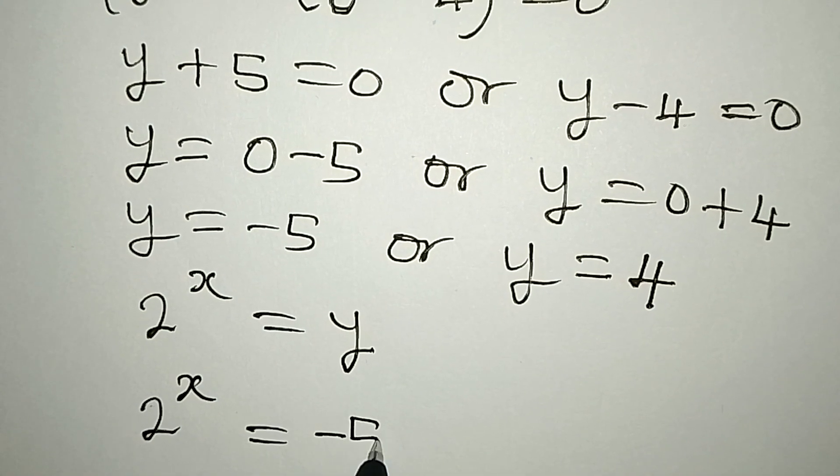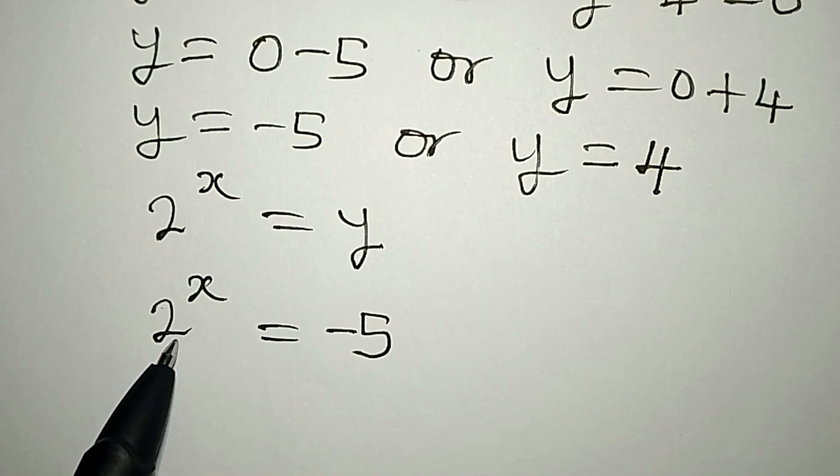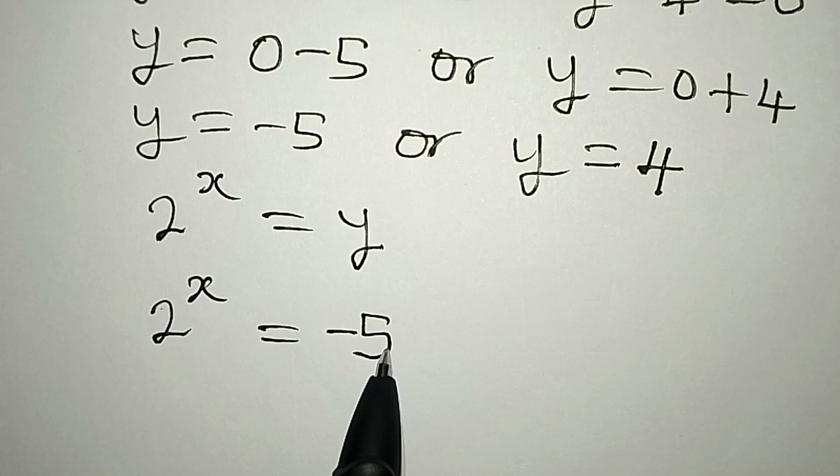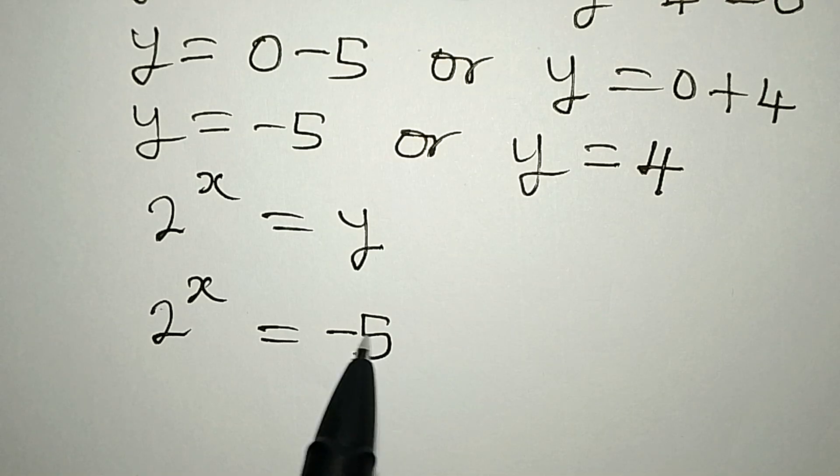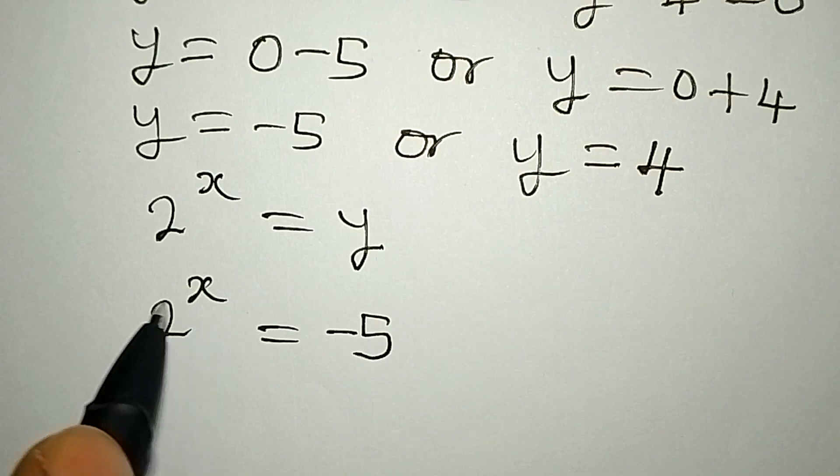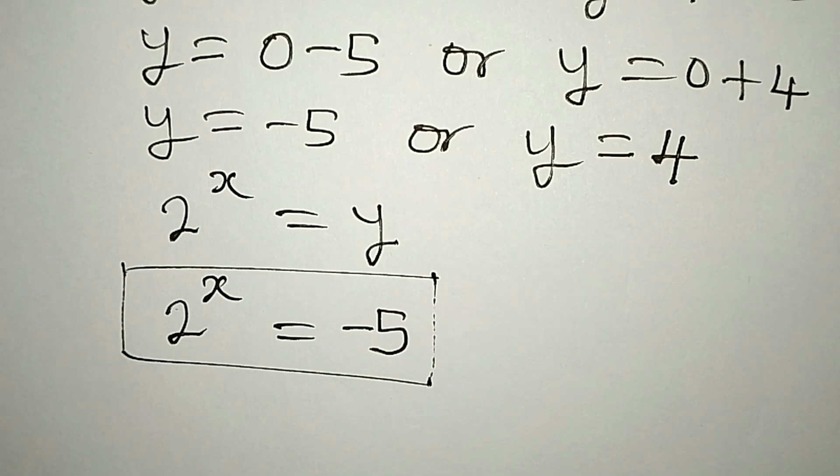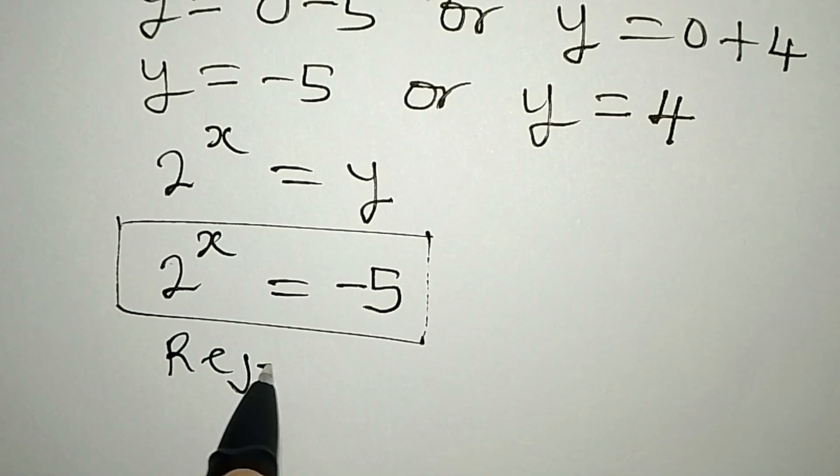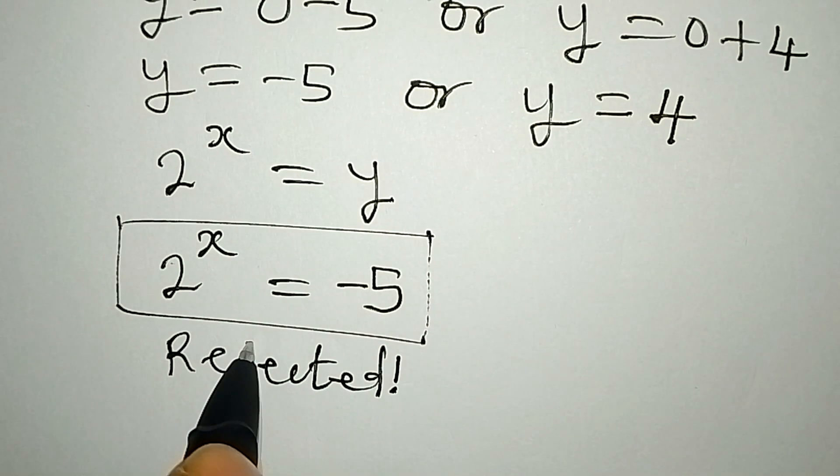This means that if we put in the first value of y, it will be 2 to the power of x equal to negative 5. And the question is, what power of 2 will give you negative 5? If you put 0 here it's giving you 1, if you put 1 here it's giving you 2 as the value. There's no way this will give you minus 5.